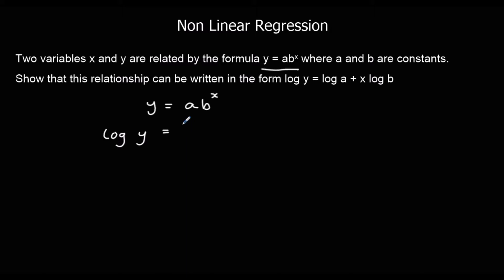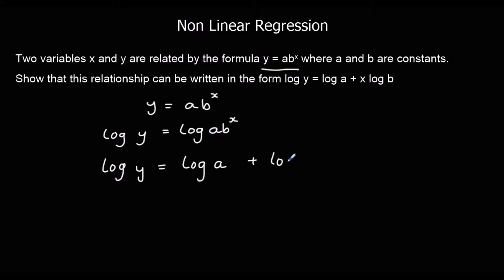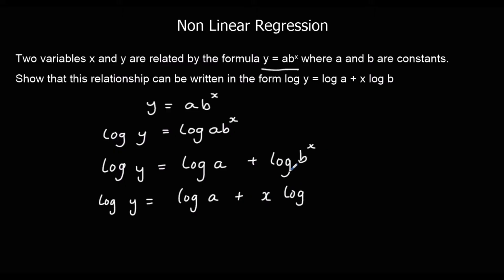Log y equals log of a times b to the power of x. And from the rules of logarithms, if you've got two things multiplied together, you can separate them out and put a plus in between them. So, log a plus log b to the power of x. And where you've got a power, the x can jump down to the front. So log b to the power of x is the same as x times log b.